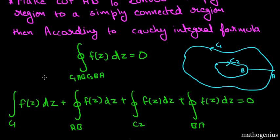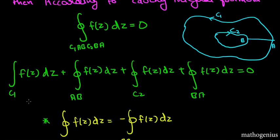According to Cauchy's integral formula, the integration along this simply connected region curve is zero. C1 is taken in the positive direction with no negative sign. So we have: positive integration along C1, then from A to B, then integration along C2 where the inside region is to our left, and then B to A. We can break this into parts: C1, then A to B, then C2, then B to A.